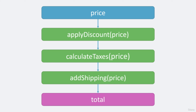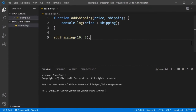During this entire process, the price will be passed around through a couple of functions. It's possible that the data type may change during this process. If it does, we may get unexpected behavior. Our functions assume the price will be a number — what if it changes to a string? JavaScript won't throw an error. It'll allow the data type to change, even when we don't want it to. We'll only find out if the data type changes by testing the app in the browser. Wouldn't it be convenient to catch this type of error in our code while writing it? That's possible with TypeScript.